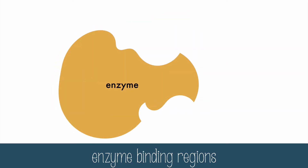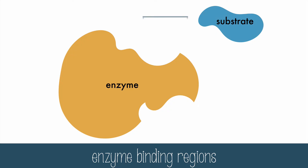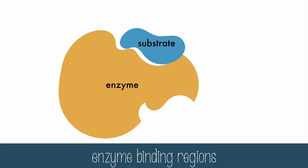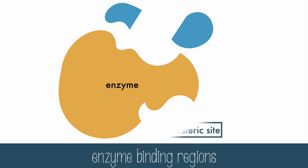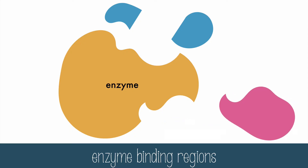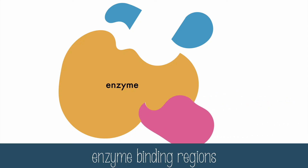Enzymes act on specific substrates. They fit together at the active site, almost like a lock and key. Once they're bound together, the enzyme can act on the substrate — it may break the substrate down or build it up with another substrate. The enzyme may also have an allosteric site, which is a binding site other than the active site, and it can alter the shape and activity of the enzyme.